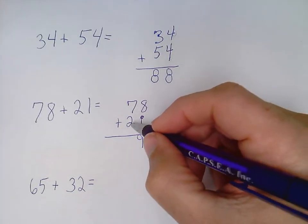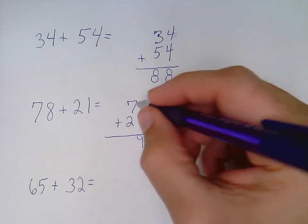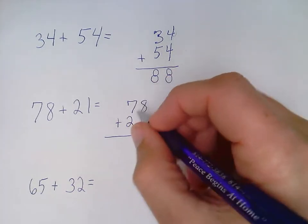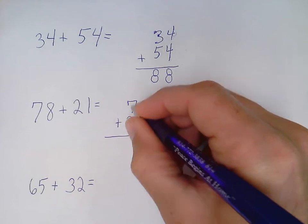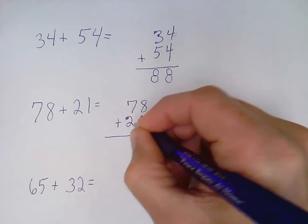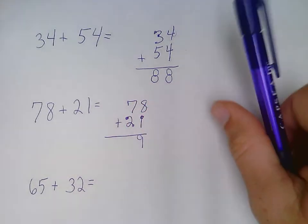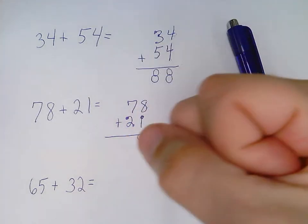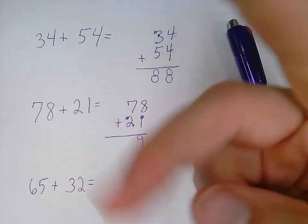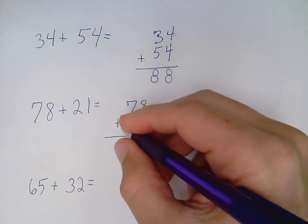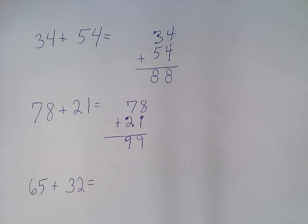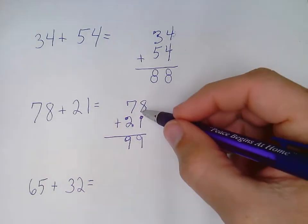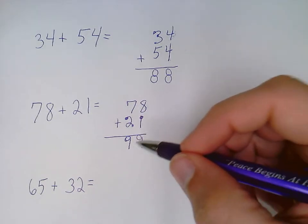7 plus 2. I can circle the big number 7, do my touch dots with the other number: 7, 8, 9. Or grab that big number 7: 8, 9. So 7 plus 2 is 9, which is kind of funny. I got 88 as my first answer, I have 99 as my second answer. So 78 plus 21 equals 99.